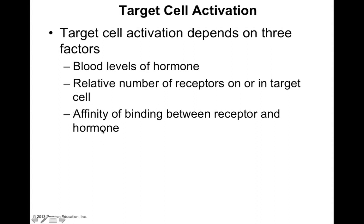Another thing that influences the level of activation is affinity, which refers to the strength of binding between a receptor and a hormone. If the receptor and hormone have a very high affinity, they're going to bind together very strongly, making the hormone less likely to unbind and therefore exerting a longer or stronger effect. If the receptor and hormone have a lower affinity, the hormone won't bind as strongly and will be more likely to unbind, resulting in a shorter or weaker effect on a given target cell.